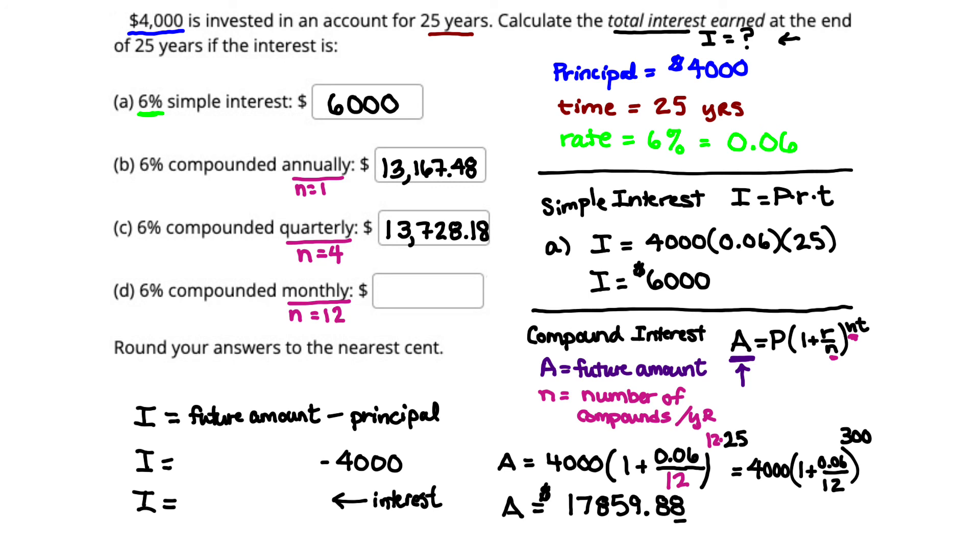I want to put a little note here. When you look on the calculator, you get a value 17,859 point, and then it's 87925. But remember, we're rounding to the nearest cent or the nearest hundredth, and since the value to the right is 9, we need to round that up, and that's going to give us 88. So we have a future amount of $17,859.88.